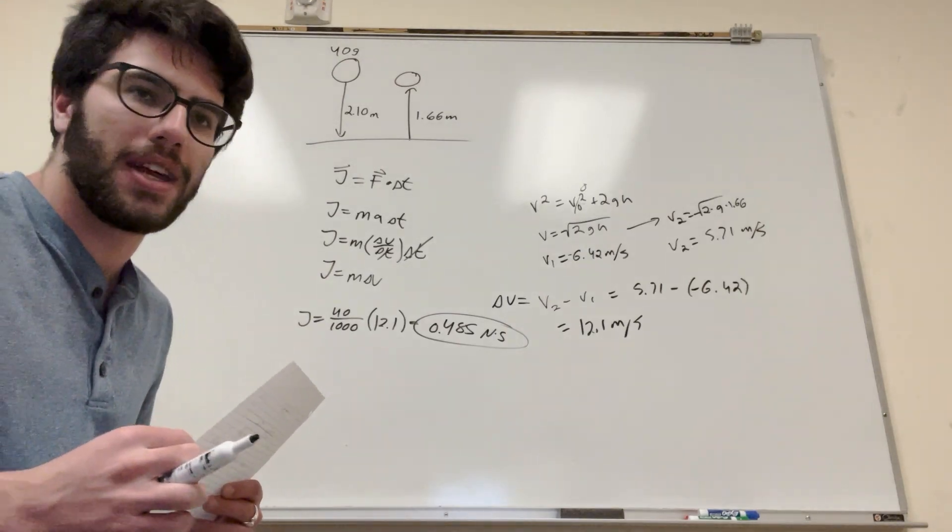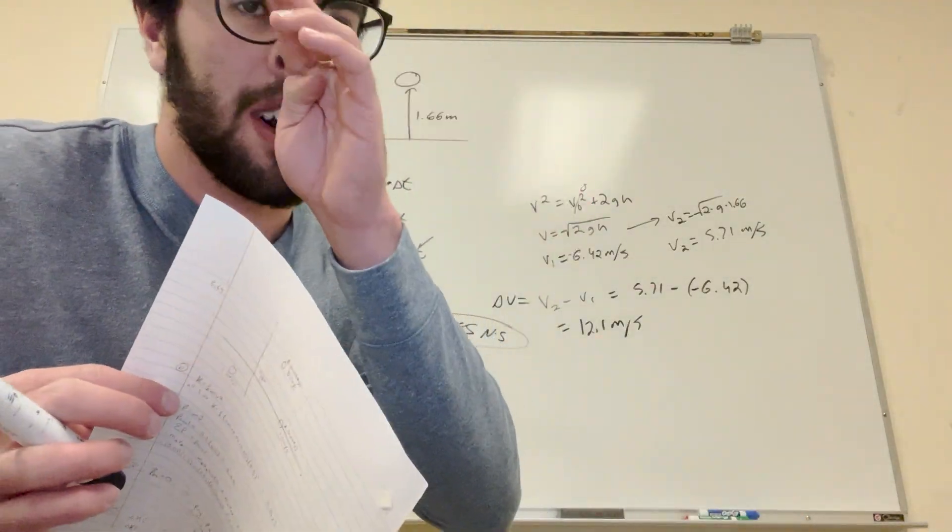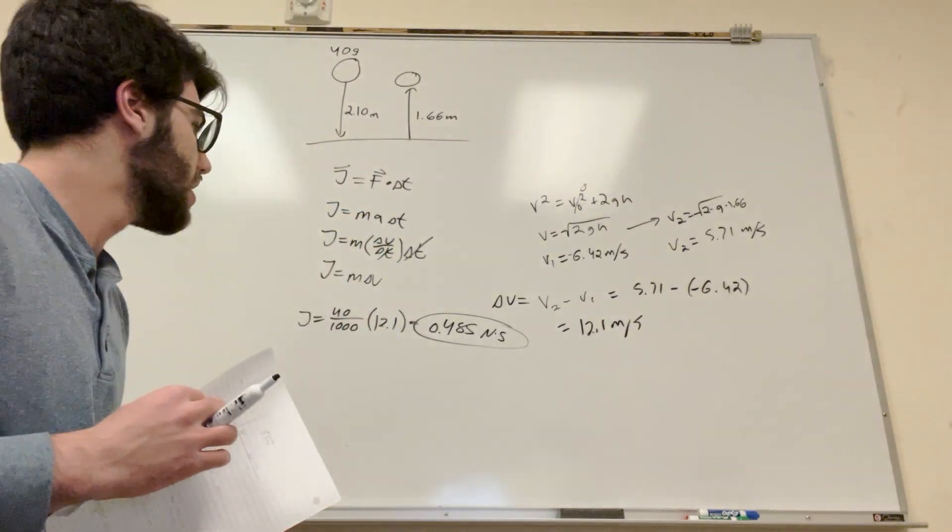Part B, let's do part B. Okay, so part B, what is it asking? So if the ball is in contact with the slab for a time of 1.9 milliseconds, find the average force on the ball during impact. Okay.